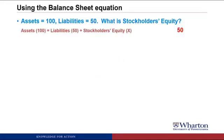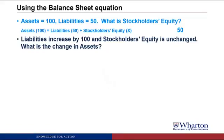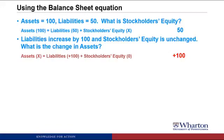We solve this with the balance sheet equation. Assets are 100, liabilities are 50, so stockholders' equity must be 50 — giving us 100 on both sides. Next: liabilities increase by 100 and stockholders' equity is unchanged — what is the change in assets? Using the balance sheet equation with changes: stockholders' equity unchanged, liabilities up by 100, so assets must also go up by 100 for the equation to stay in balance.